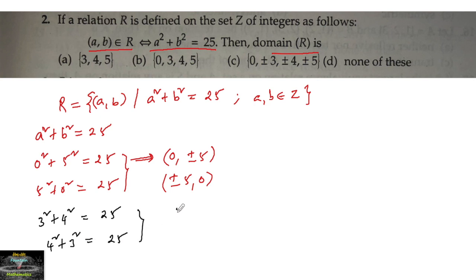From here, the possibilities are (±3, ±4) and (±4, ±3).